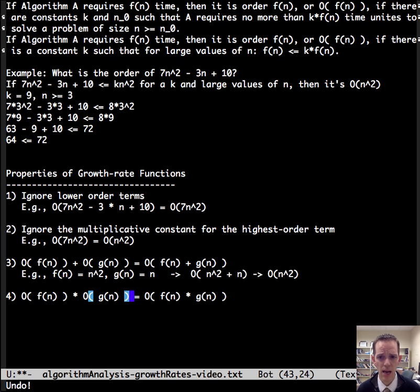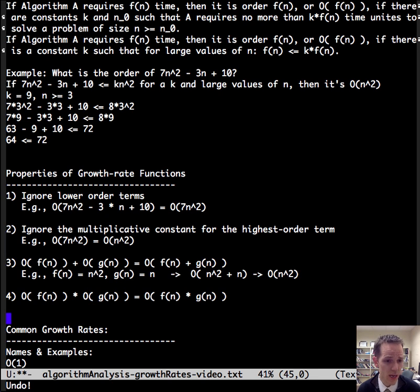So now that we can determine the big O of individual algorithms, let's talk about typical growth rates. So here's a list of common growth rates, their names, and we're going to talk about some examples. Here we have a constant time. This is any code that doesn't depend on the input. For example, a print statement, an if statement, it doesn't depend on the input. It's just constant time.